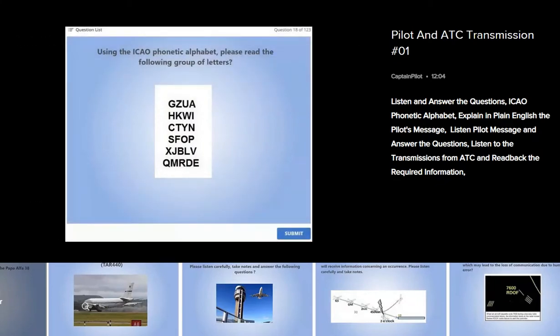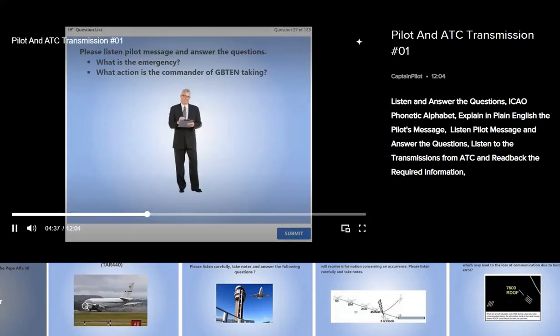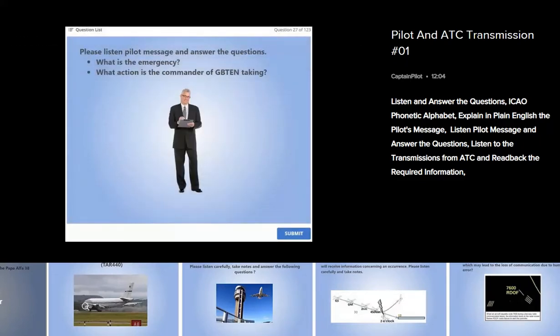Using the ICAO phonetic alphabet, please read the following group of letters. Using the ICAO phonetic alphabet, please read to flight level 3-0, 10 miles north of Tango 1, heading to Alfaville for emergency landing.